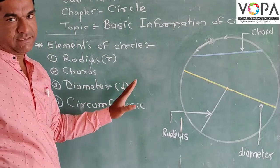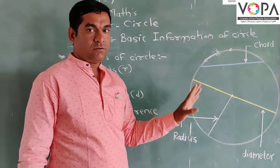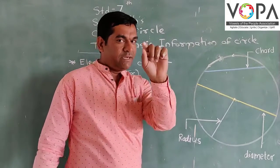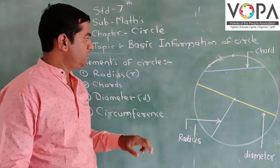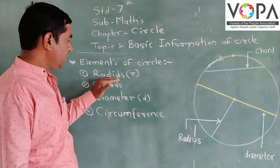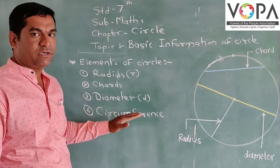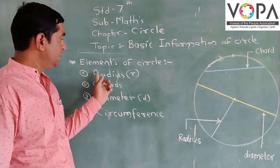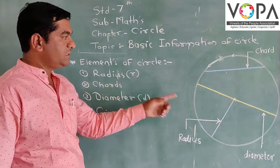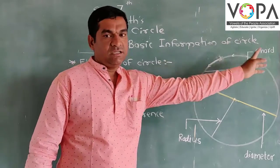So to summarize the basic elements: radius, chord, diameter, and circumference. Using the radius, we construct the circle.